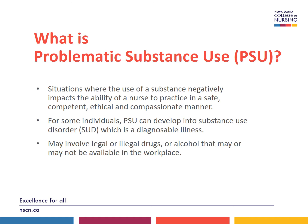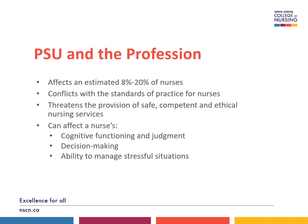PSU may involve legal or illegal drugs or alcohol that may or may not be available in the workplace. Problematic Substance Use affects an estimated 8 to 20% of nurses. It conflicts with the standards of practice for nurses and threatens the provision of safe, competent, and ethical nursing services. In addition, it can affect a nurse's cognitive functioning and judgment, decision making, and ability to manage stressful situations.